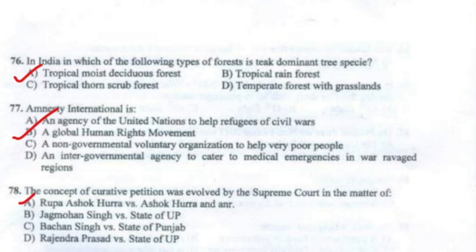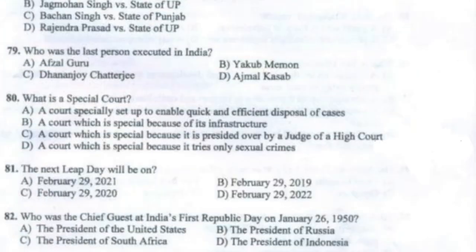Question 79: Who was the last person executed in India? The answer is Option B — Yakub Memon.